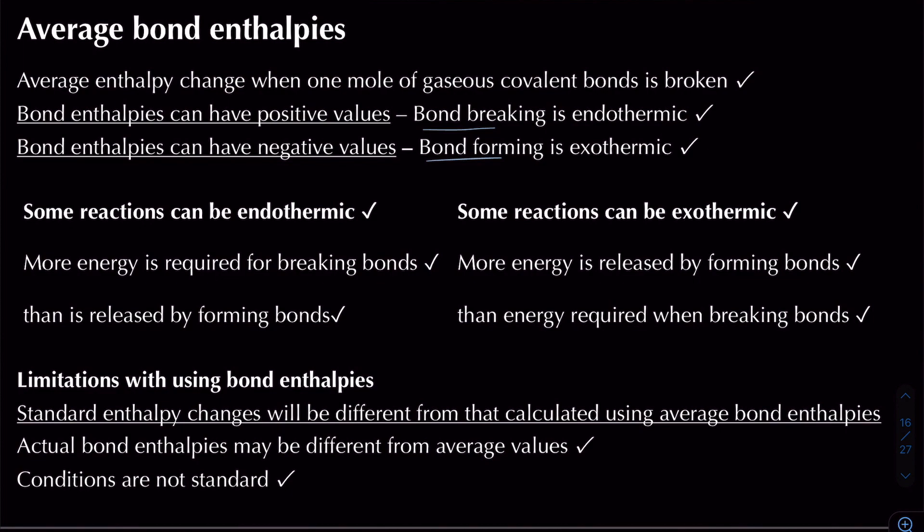To explain an endothermic reaction, we say that more energy is required for breaking bonds than is released by forming bonds. For an exothermic reaction, more energy is released by forming bonds than is required when breaking bonds.